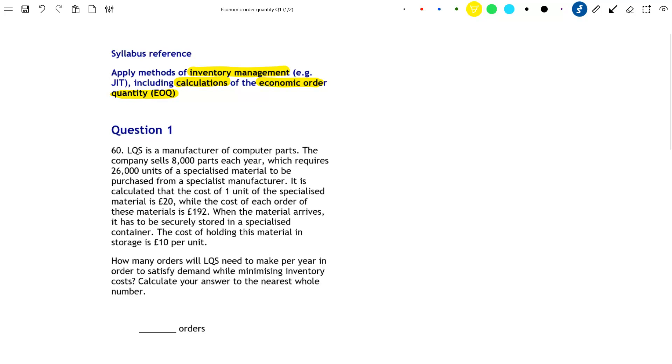Now when doing any exam question, the first thing I recommend you always do is to find the question requirement line as that is the line that will tell you what it is you need to do in order to answer the question. And we can see that at the bottom here, we're being asked to calculate the number of orders LQS will need to make per year in order to satisfy demand while minimizing inventory costs.